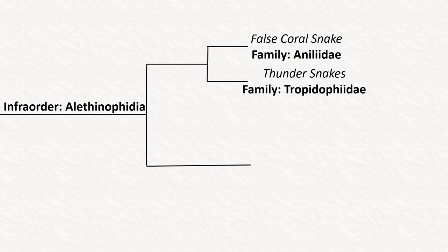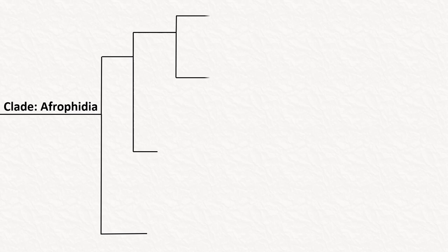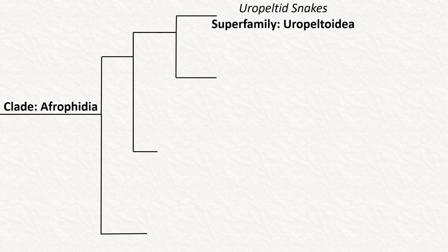Returning to the phylogeny, all remaining snakes are in the clade Afrophidia. From here, let's start with Uropeltoidea, or the Uropeltid snakes. Like most of the snakes talked about so far, this name probably means very little to most people. There are three families here.